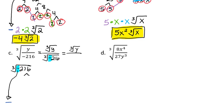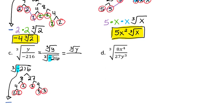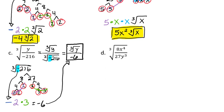So for 216, let's try an 8. 216 divided by 8 gives us 27. My 8 breaks down with a 4 and a 2, and 4 gives me two 2s. 27 breaks down into a 3 and a 9, where 3 is prime, and 9 breaks down into 3 and 3, both prime. Now looking for our groups of 3 — I see a group of three 2s, so we bring out a 2. And I see a group of three 3s, so we bring out a 3. That gives us a 6, and with the negative sign, we get negative 6. So our final answer is the cubed root of y divided by negative 6.